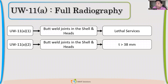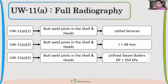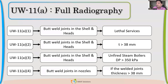When we have butt welded joints in shell and head and the thickness is more than 38 mm, then full radiography also becomes mandatory, even though it is not a lethal service. So if thickness is more than 38 mm, full radiography is required. If not specified by the client, we have to specify it. If it is unfired steam boilers having pressure more than 50 psi, then it also becomes mandatory to do full radiography for all thicknesses. Even for nozzle thicknesses, if it is more than 38 mm, we have to do radiography.